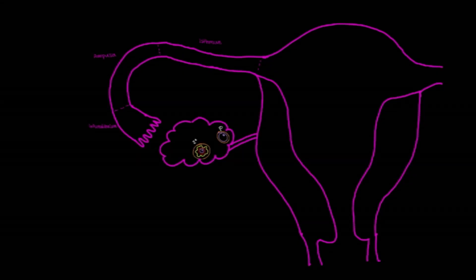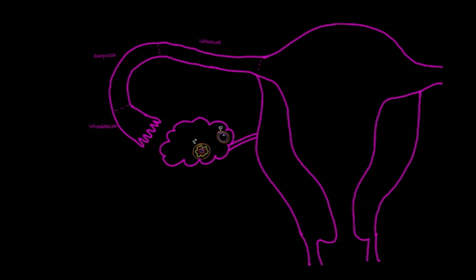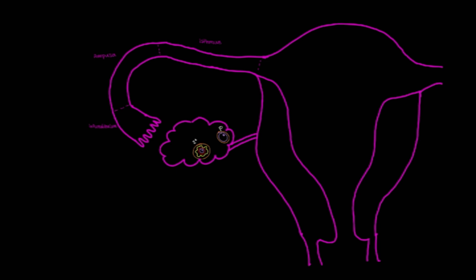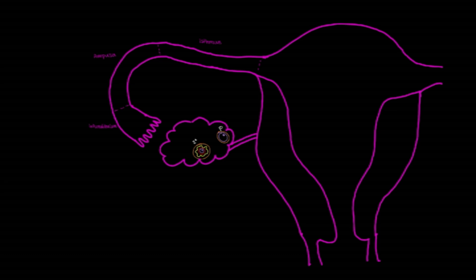Hello. In this video, we'll be going over the first week of development, specifically ovulation to implantation. Before I get into that, I wanted to first talk about the sexual cycles that occur in an adult female.